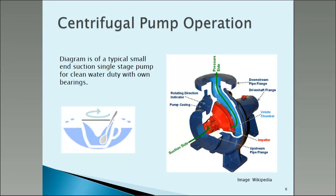The best way to understand a centrifugal pump is to become a pump yourself. If you've got a jug of water, fill it up to within a couple of inches at the top, then find a wooden spoon and stir it. You are putting mechanical energy into the water to create a centrifugal force — giving velocity energy to the water. The only way it can escape is by going up the edge of the jug. When you're stirring it fast enough, the water will start to go over the edge. You are now a pump, moving water from one level over the top down to another reservoir. That is basically how a centrifugal pump works.